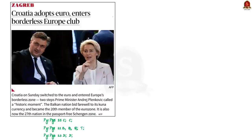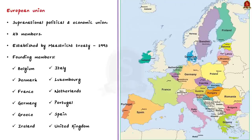Our next discussion is going to be based on a foreign page snippet about the entry of Croatia into the Eurozone. By entering the Eurozone, Croatia has adopted Euro as its currency and replaced its local Kuna currency. To understand the significance of the Eurozone, we first need to know about both the Eurozone and the European Union. The European Union is a supranational political and economic union of 27 member states located primarily in Europe. Supranational means having power or influence that transcends national boundaries or governments. The European Union came into existence by the signing of the Maastricht Treaty, signed by 12 countries in the year 1993, making them the founding members of the EU.